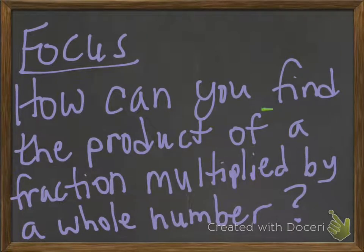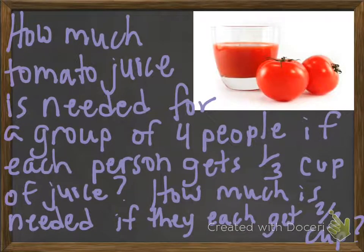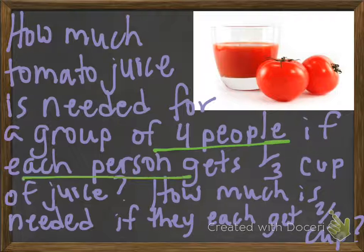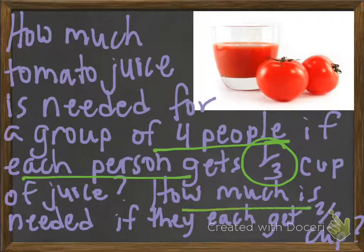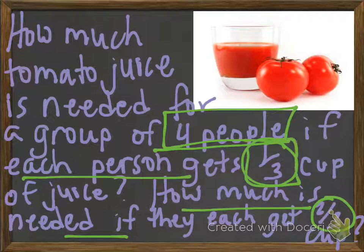Our focus is: how can you find the product of a fraction multiplied by a whole number? Well, let's take a look. How much tomato juice is needed for a group of 4 people if each person gets 1 third cup of juice? Or, how much is needed if they each get 2 thirds cup? So we're looking at 4 people — if each person gets 1 third of a cup, how much do they need? Or if they get 2 thirds of a cup, how much is needed altogether?